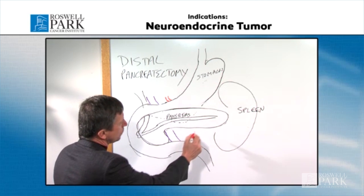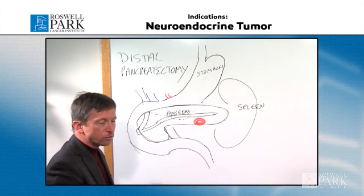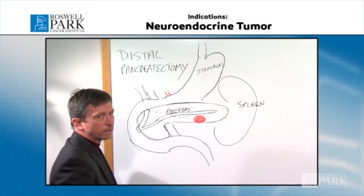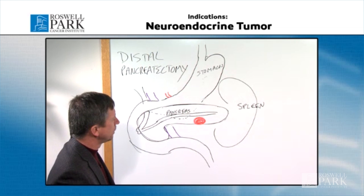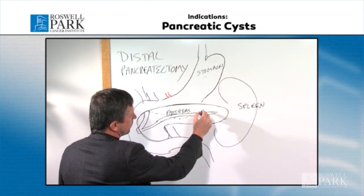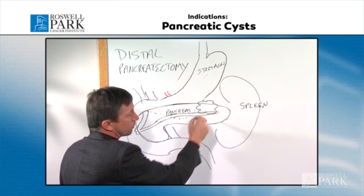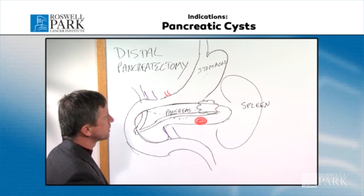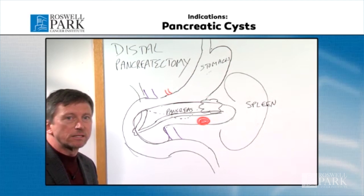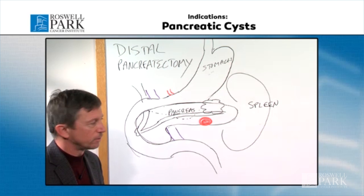For example, you can have a tumor here called a neuroendocrine tumor, and that can be a reason that the pancreas is being removed. Another common thing that we see are cysts of the pancreas, where you have a fluid-filled or mucus-filled cyst. These cysts can be either precancerous or cancerous, and that's another common indication for removing the tail of the pancreas.